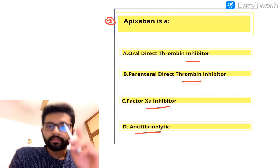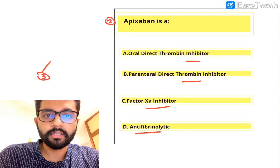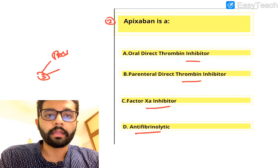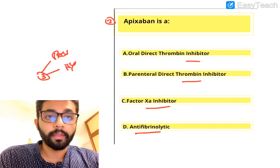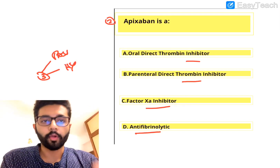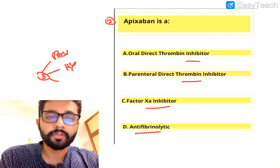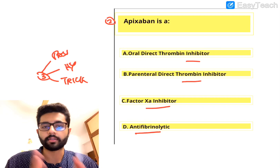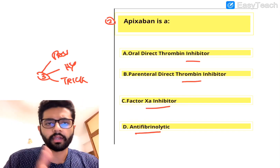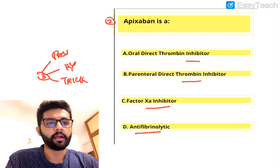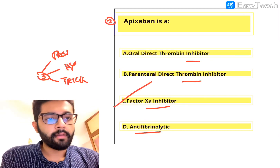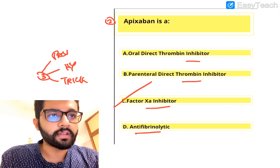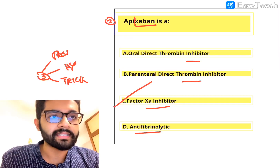There are three reasons I've included this question. First, it's a previous year question. Second, anticoagulants is a high yield topic. Third, there's a little trick that can help you answer these kinds of questions very easily. The answer is C — Factor 10A inhibitor. How do you remember this? The name of this drug ends in '-xaban' and it has XA in it. XA is nothing but factor 10A.